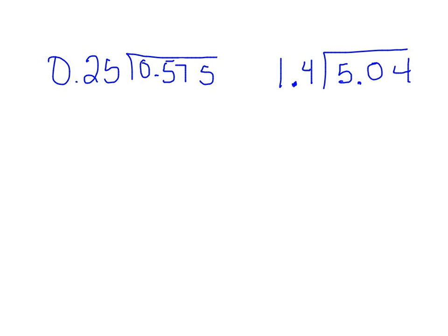One thing you need to remember is that you have to make the number on the outside of the division box a whole number, and you do that by moving the decimal to the right, however many places it takes to make it a whole number.